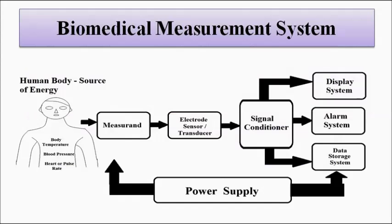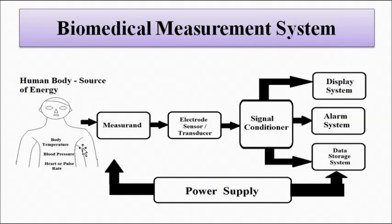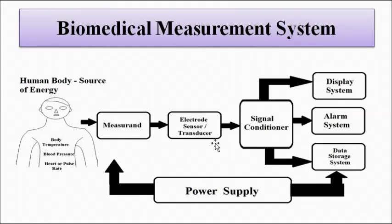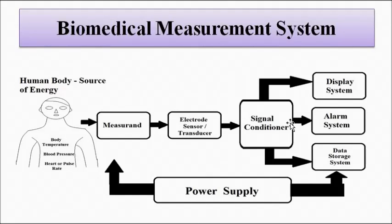A basic biomedical measurement system looks something like this. Whatever parameter we want to measure — be it ECG, electromyogram, electroencephalogram, body temperature, blood pressure, heart rate, pulse rate — we measure it with the help of a sensor or transducer placed on the electrode. After the transduction process, the measurement is converted into a suitable voltage or current signal, which is of low magnitude in the order of microvolts or millivolts. It is then fed to the signal conditioner and processing units for amplification, frequency response, noise removal, linearization, and then given to the output system for display, storage, or alarm generation.